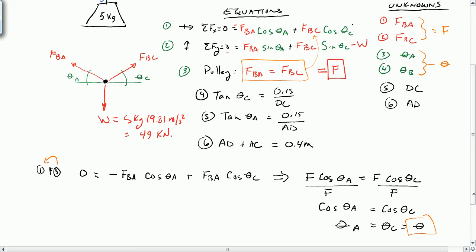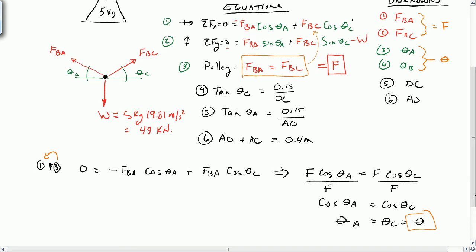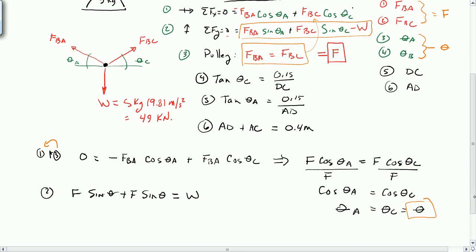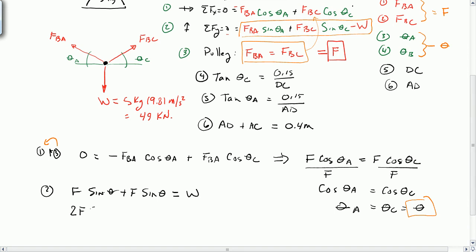These are equal to theta, these two are equal to each other, and they equal some force F. And if I plug that back into equation 2, if I look at equation 2 now and using those two substitutions, what I get is F sine of theta plus F sine of theta equals W. So I've taken this equation here and move W over to the other side. So this is 2F sine of theta equals W. We know W.